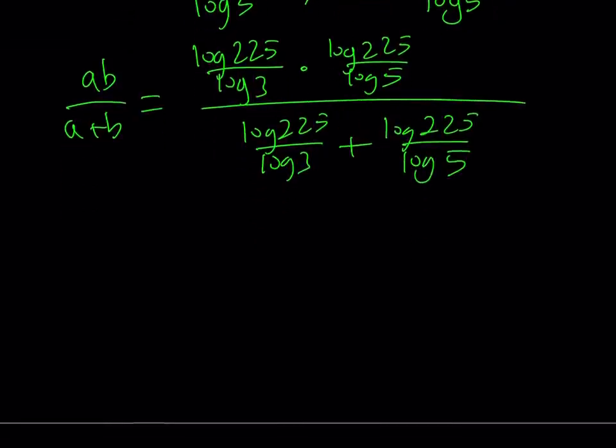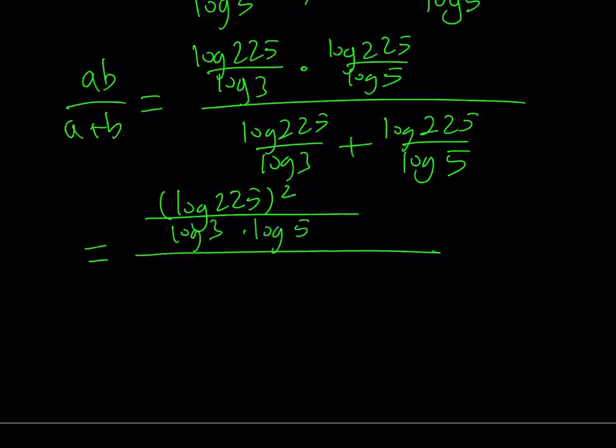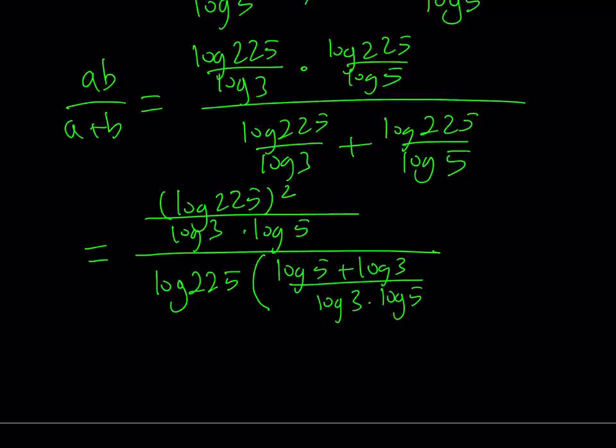Now, what am I going to do in the numerator? The numerator, I can just multiply those two quantities. That means log 225 squared divided by log 3 times log 5. That's multiplication, it's easy. The bottom one, we need a common denominator. But let's go ahead and take out log 225 as a common factor. And we get 1 over log 3 plus 1 over log 5. And then make a common denominator. We get log 5 plus log 3 divided by log 3 times log 5, which is the common denominator.